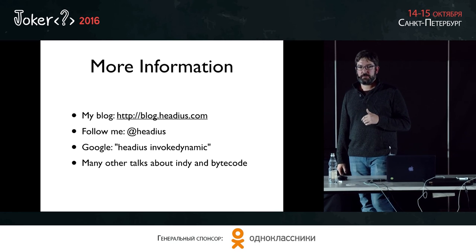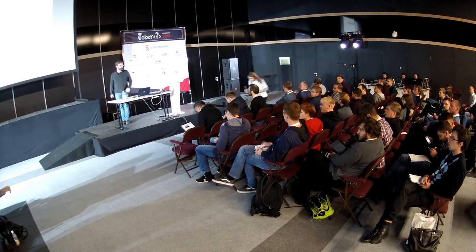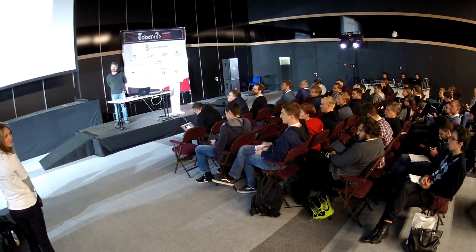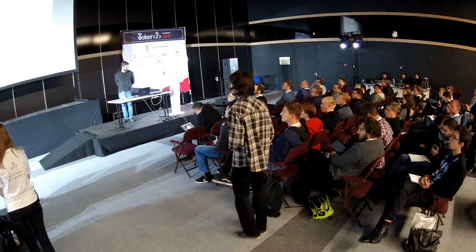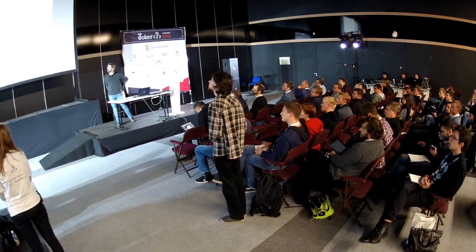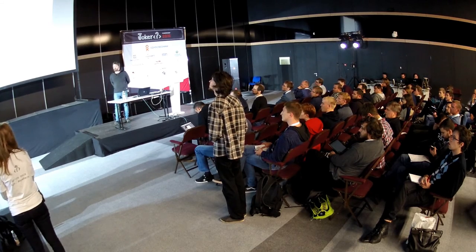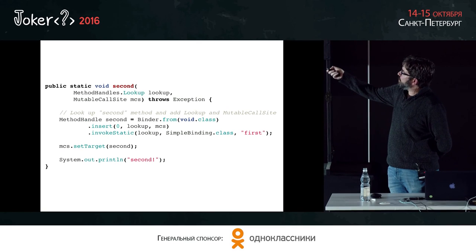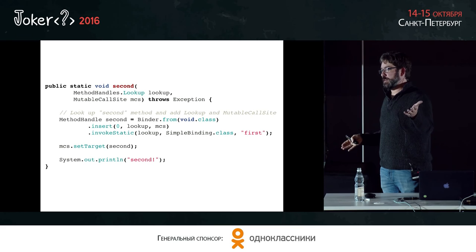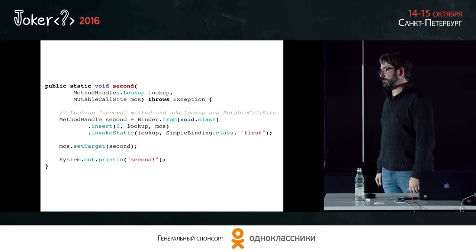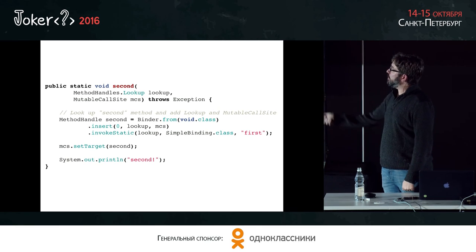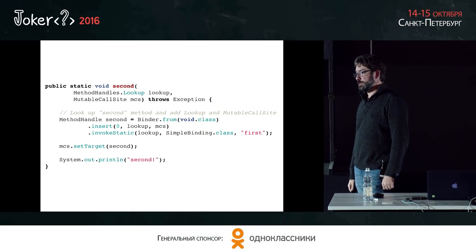Question: Could you show again the slide where you explained mutable call site, and why should we use the binder.from approach — can't you simply create the method handle using the lookup object directly? Yes, you can certainly just do the standard method handle API. The Binder here is from my library InvokeBinder — it's just a wrapper around the method handles API that makes it a little easier to read through. It's essentially like lookup.findStatic, but you give it the lookup and it handles doing lookups on its own.